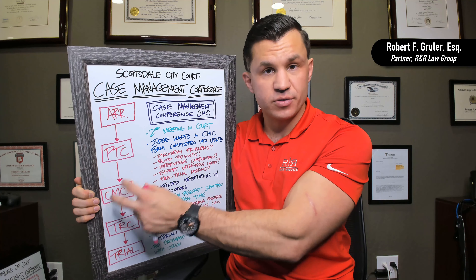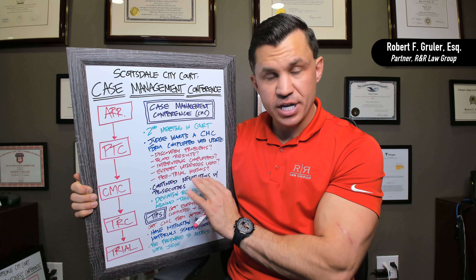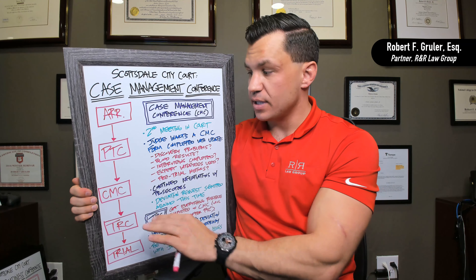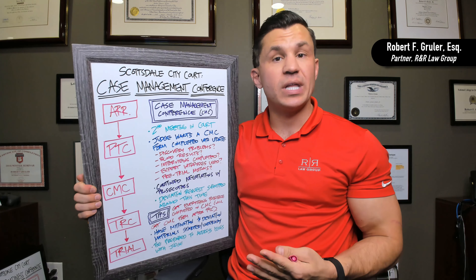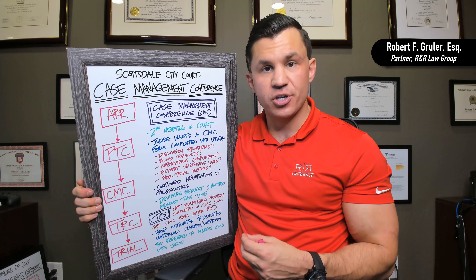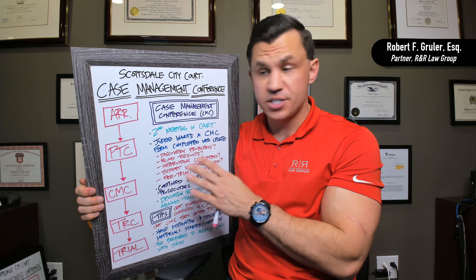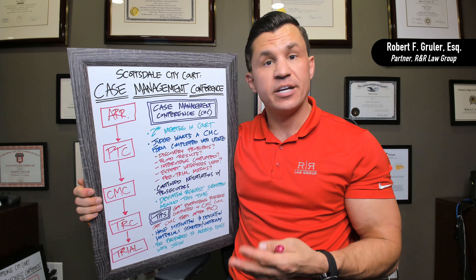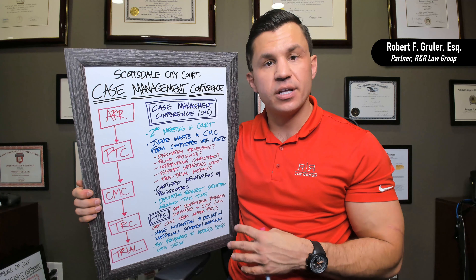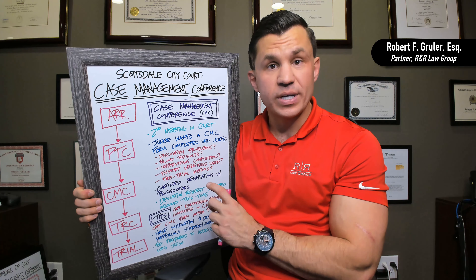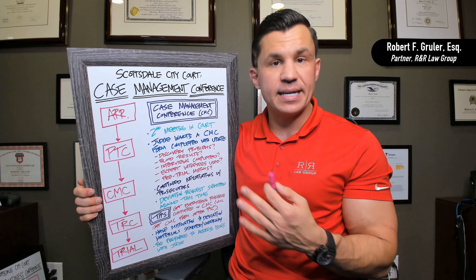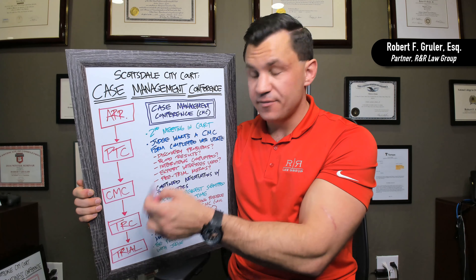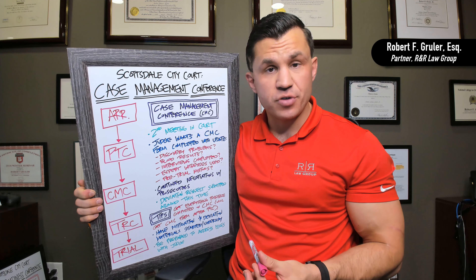We may have negotiations still taking place during the case management conference. What you want to be considering is what's called a deviation request. If you go to the pretrial conference and they give you a plea deal you don't like, you can submit a deviation request — asking them to deviate from that standard policy offer and give you a better deal. There's a formula we use in our practice where we formulate a solid written deviation request formally sent to the city prosecutor. They'll typically do staffing meetings, review it, and get us an answer — sometimes at the CMC, sometimes at the trial readiness conference.